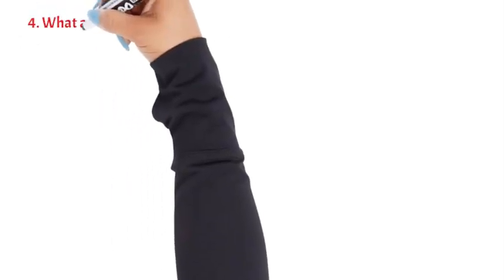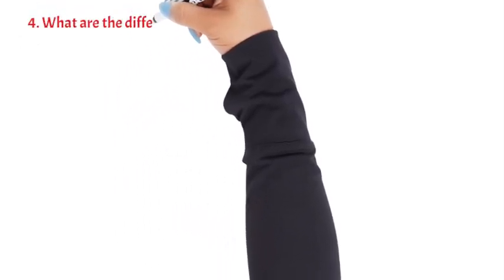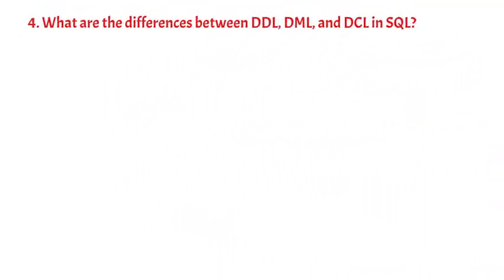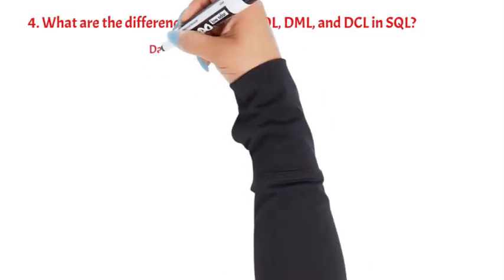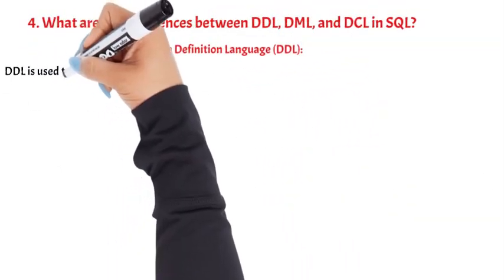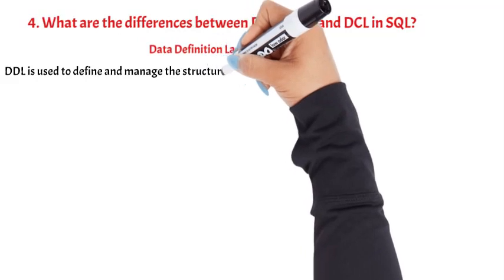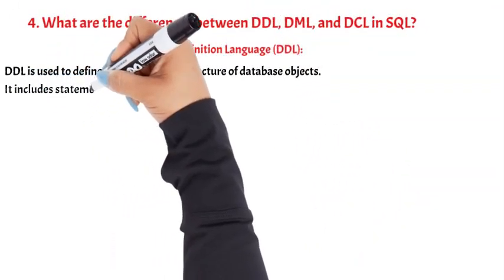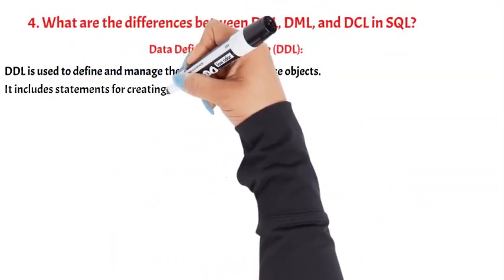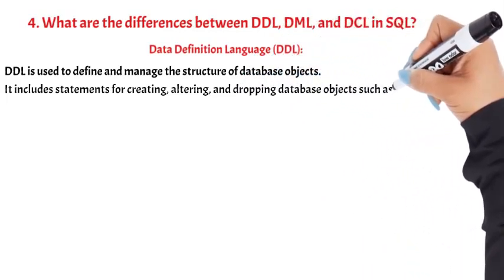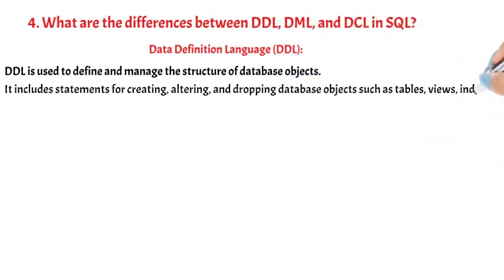Question 4: What are the differences between DDL, DML, and DCL in SQL? Data Definition Language (DDL) is used to define and manage the structure of database objects. It includes statements for creating, altering, and dropping database objects such as tables, views, indexes, and schemas.